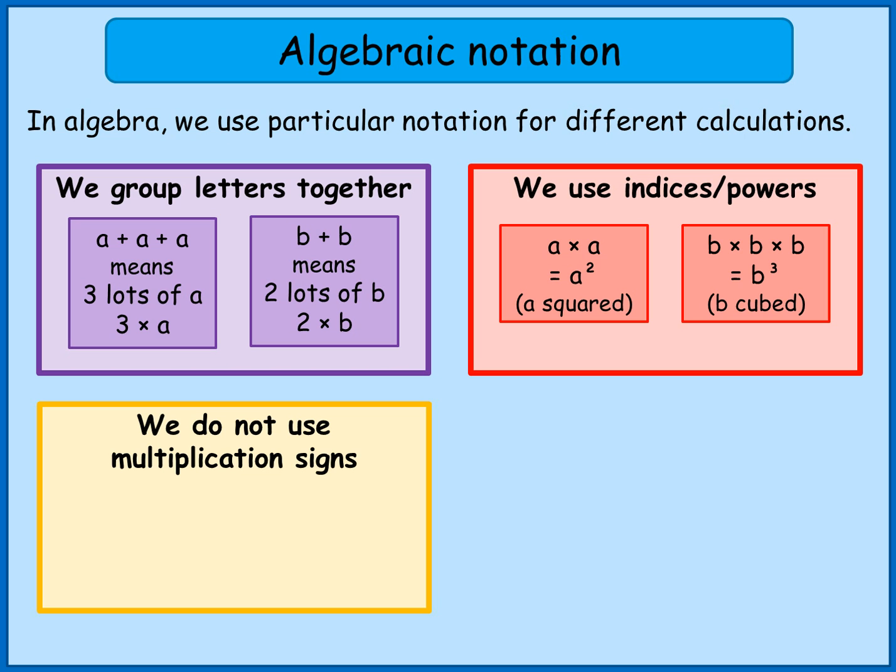As I'd written in the purple box, a plus a plus a means three lots of a—that's three times a. Now something else that we tend to do in algebra is to remove multiplication signs. The only reason we do that is because x gets used quite a lot in algebra, and we don't want to get our x's confused with multiplication signs.